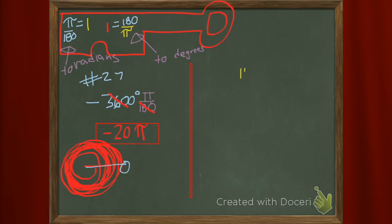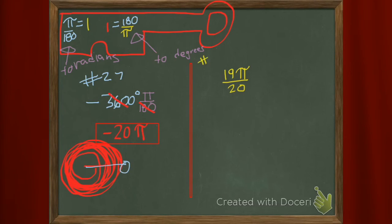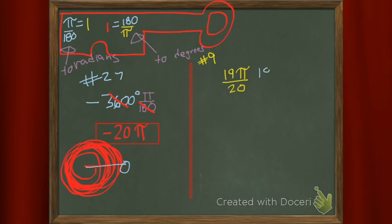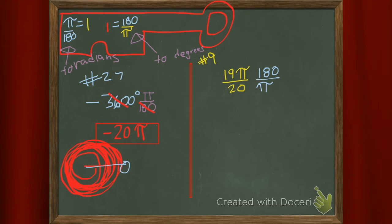Let's go the other way — let's go now to degrees from radians. So which one do I use? I use the one on the right. So I write 180 over pi because we're converting units.